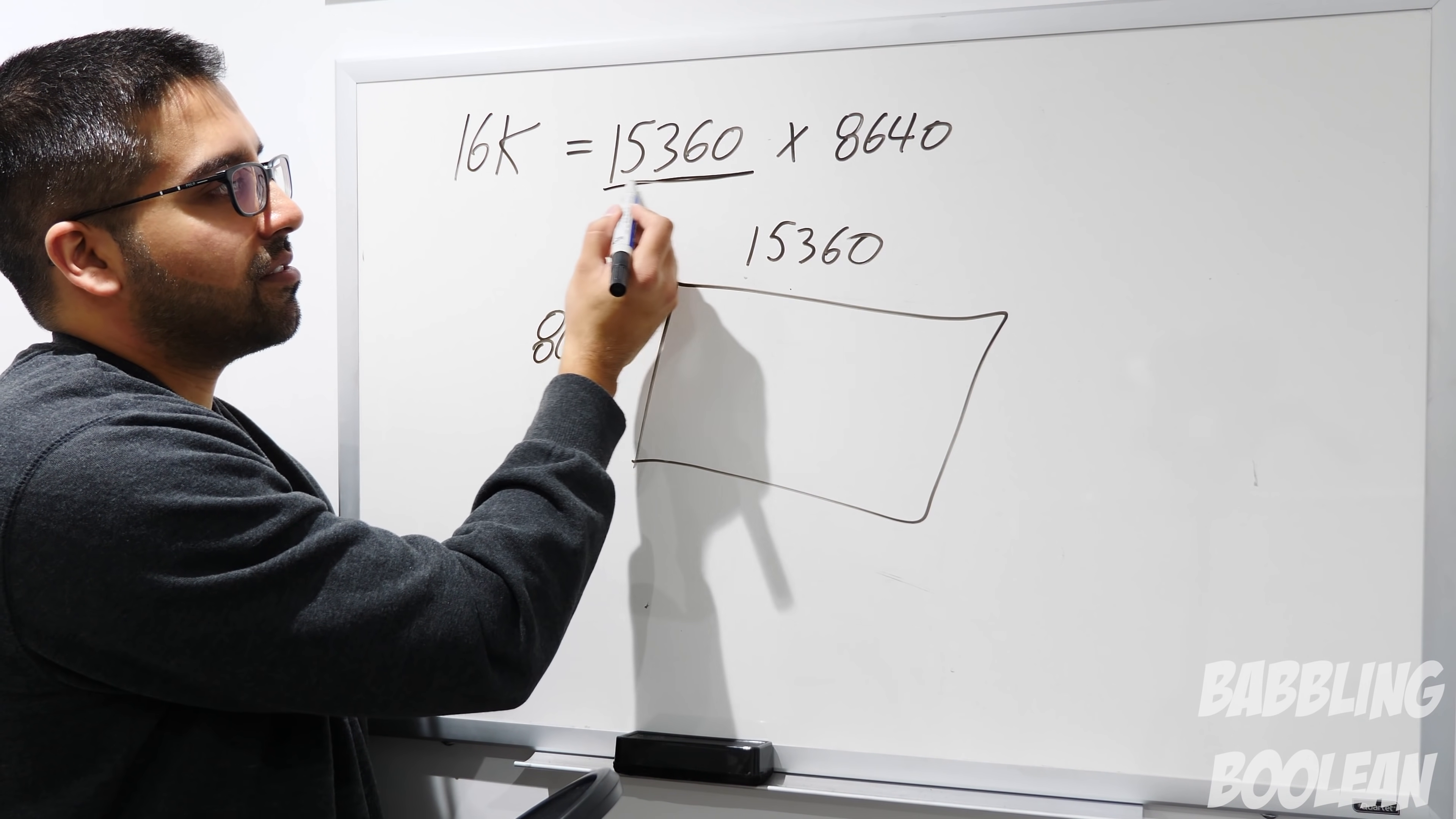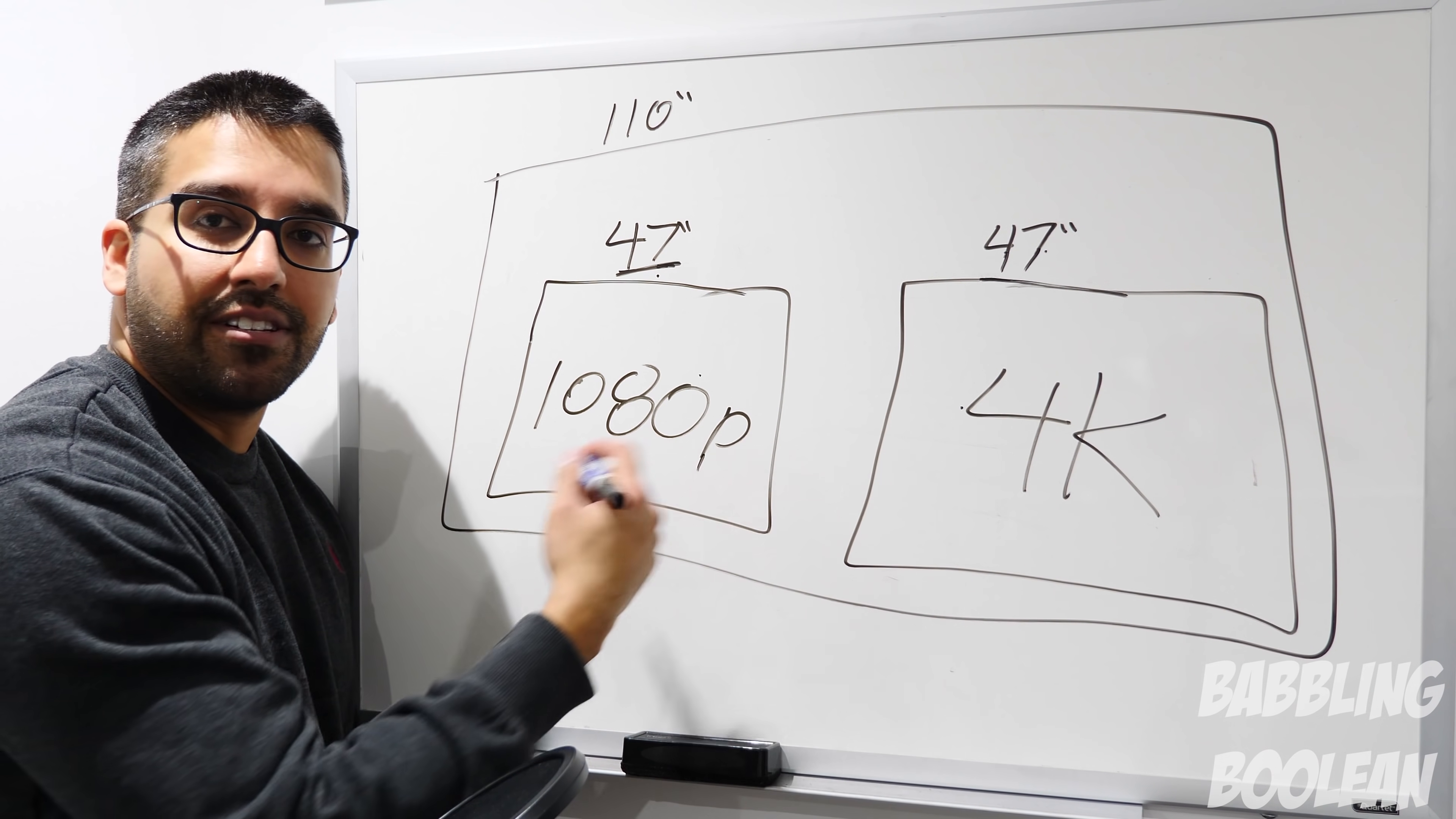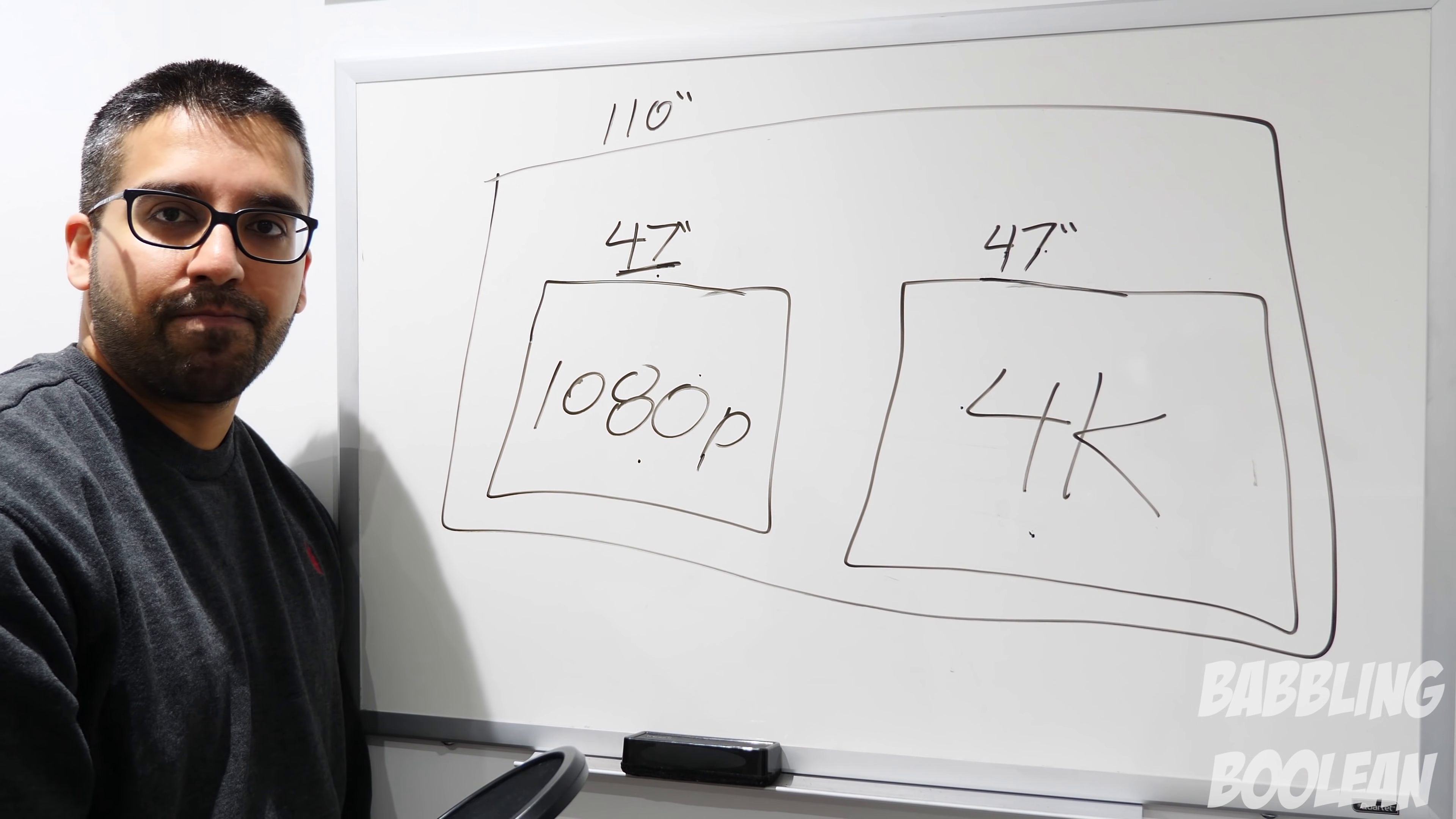Let's pretend you go to a TV store. Two TV sizes, identical 47 inch. One's 1080p, 47 inch that's 4K. Chances are you won't be able to tell the difference in quality, in sharpness, in detail. The reason being is because there's millions and millions of pixels packed in here, millions and millions and millions of pixels packed in here. The human eye just will barely be able to tell the difference.